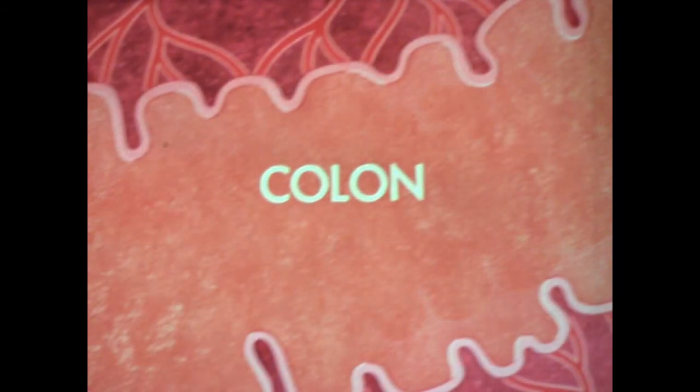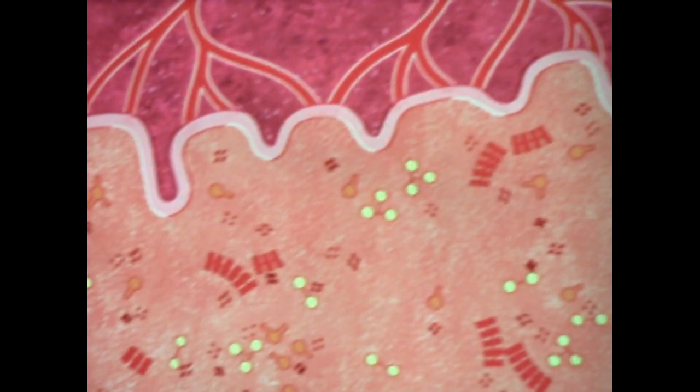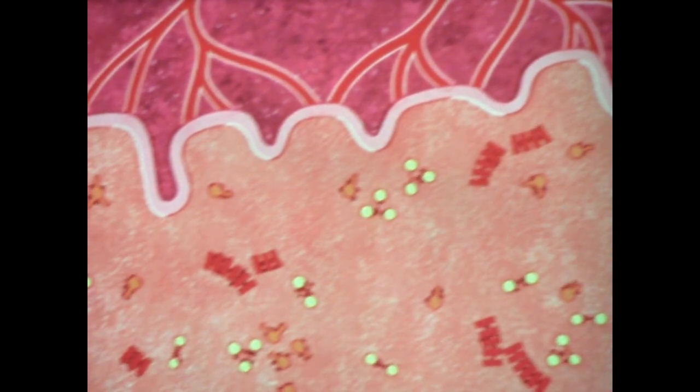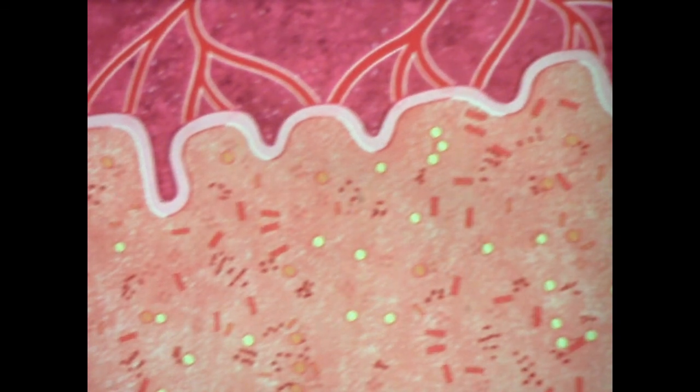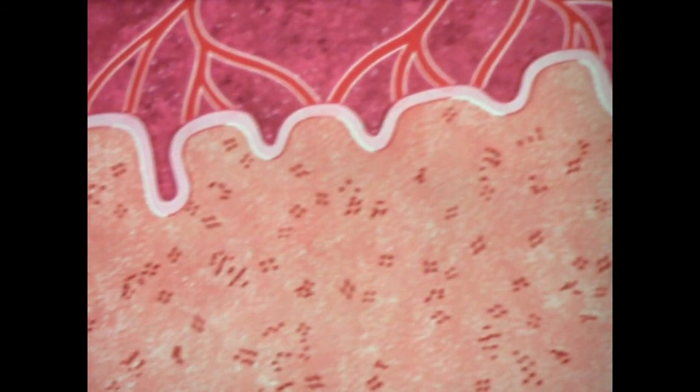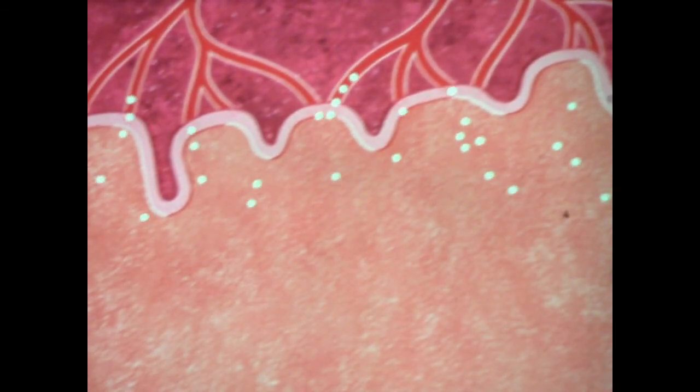In the large intestine or colon, the food residue undergoes further chemical breakdown. Here, enzymes produced by bacteria, many that live permanently in the digestive tract, act on the undigested food, helping to convert it to waste material. At the same time, most of the water that served as a liquid medium for digestion is absorbed, along with other substances, through the intestinal wall, gradually changing the waste material to a semi-solid form.